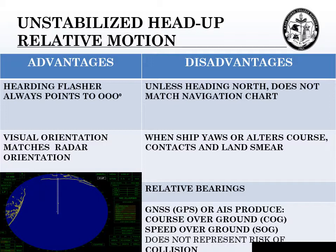Disadvantages of the unstabilized head-up relative motion radar: unless we're heading due north, it does not match our navigation chart, since most navigation charts have a north-up display. When our ship yaws from a following current, following seas, or alters course, the contacts and land masses will smear. It has relative bearings only — no true bearings — so those relative bearings must be converted to a true bearing to do any plotting. Inputs such as GNSS or AIS produce course over ground and speed over ground, which does not represent collision avoidance.